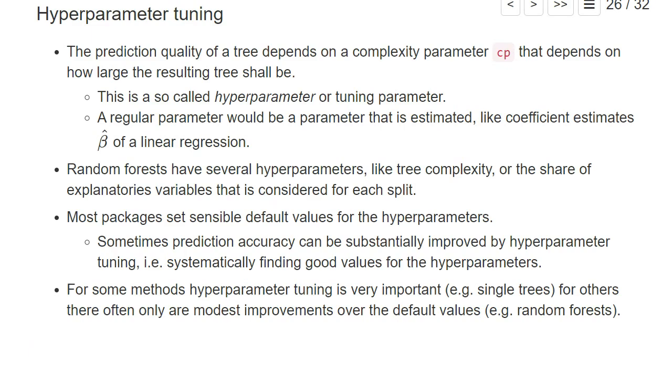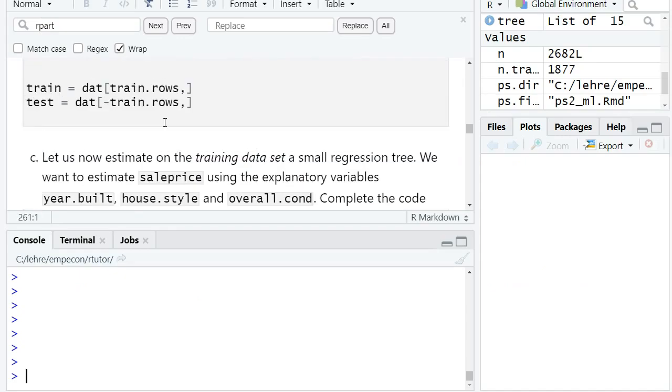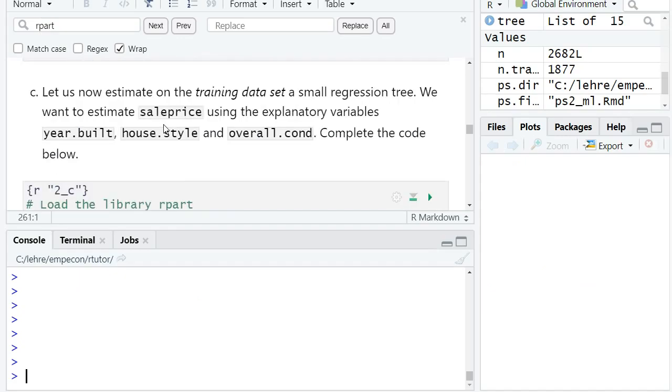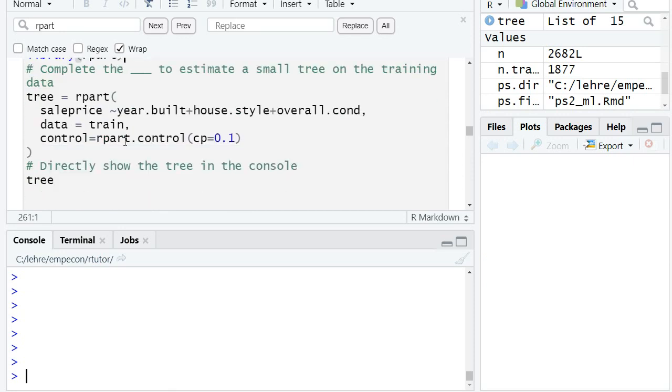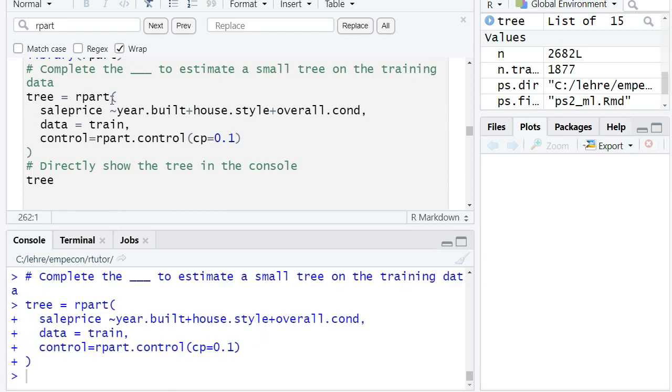Let me illustrate this in R. In your R2D problem set, which I have shown here, you will develop a prediction model to predict prices of houses. We start by estimating a tree. We use this R function rpart. You will learn this in detail in the R2D problem set. Here we have a control parameter CP that determines the complexity of the tree.